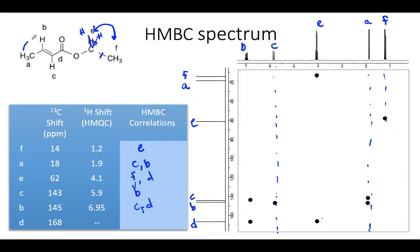So A sees B and C. That makes sense. E sees F and D. Okay, double-check. One, two, three bonds. That works.